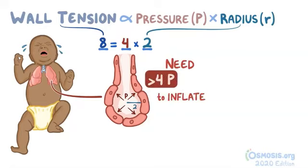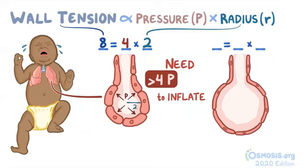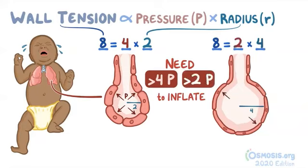Now let's say that the alveolus has expanded after the baby took a few breaths and the radius is now 4 and the wall tension remains the same. So this time, the baby only needs to breathe in enough air to generate greater than 2 units of pressure to expand the alveolus. So it takes a lot less work.